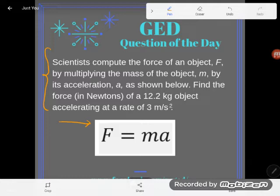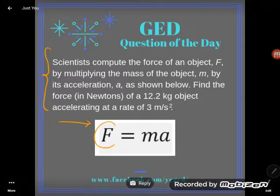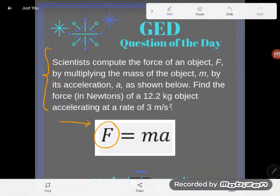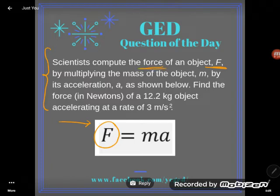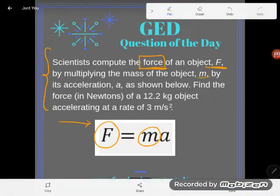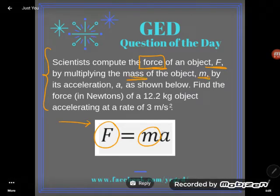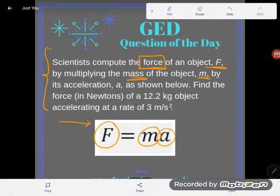So according to this formula it says if you'd like to find F and we said F stands for force. So if you'd like to find the force then take the mass, M stands for mass, and multiply it by the acceleration.